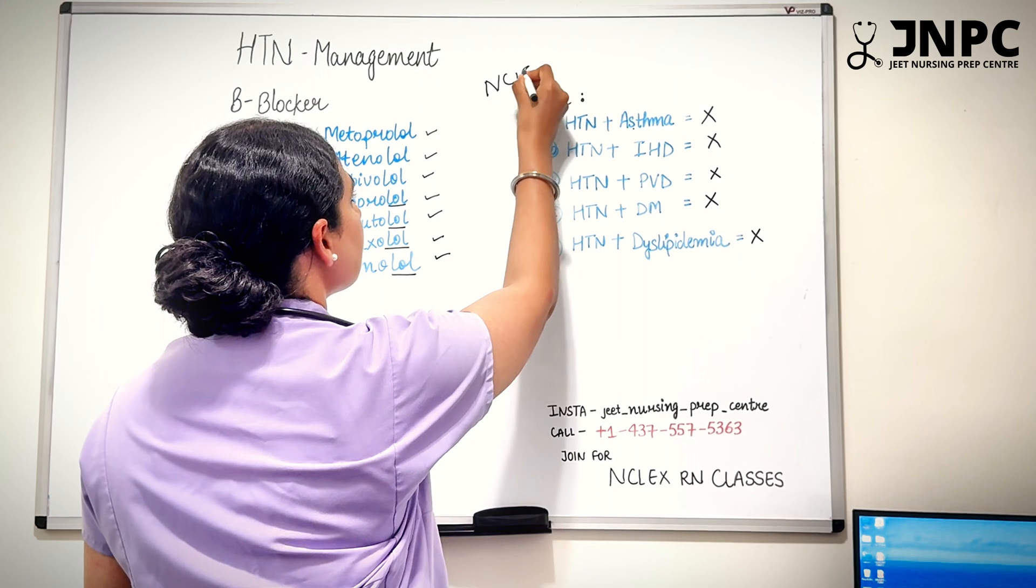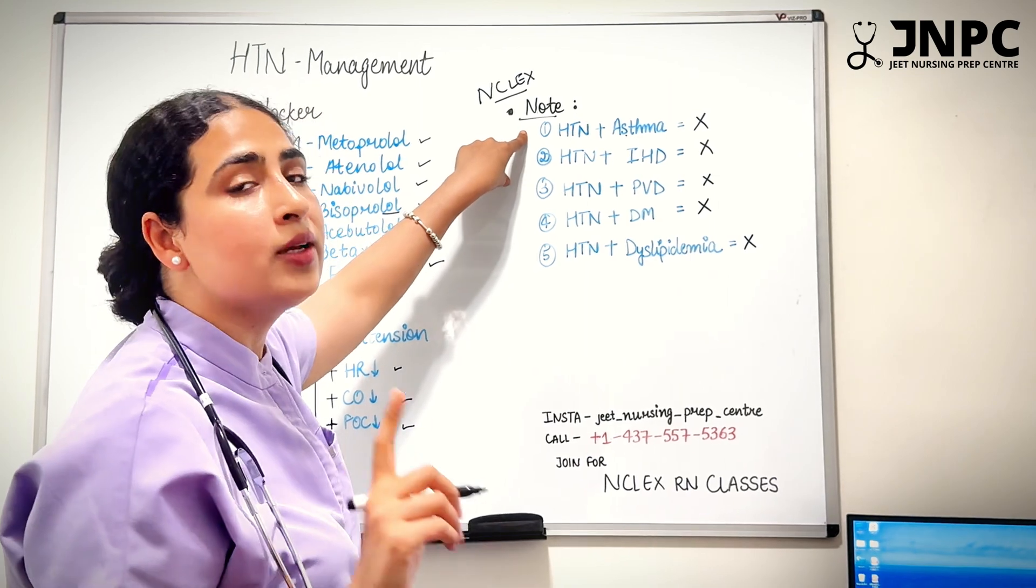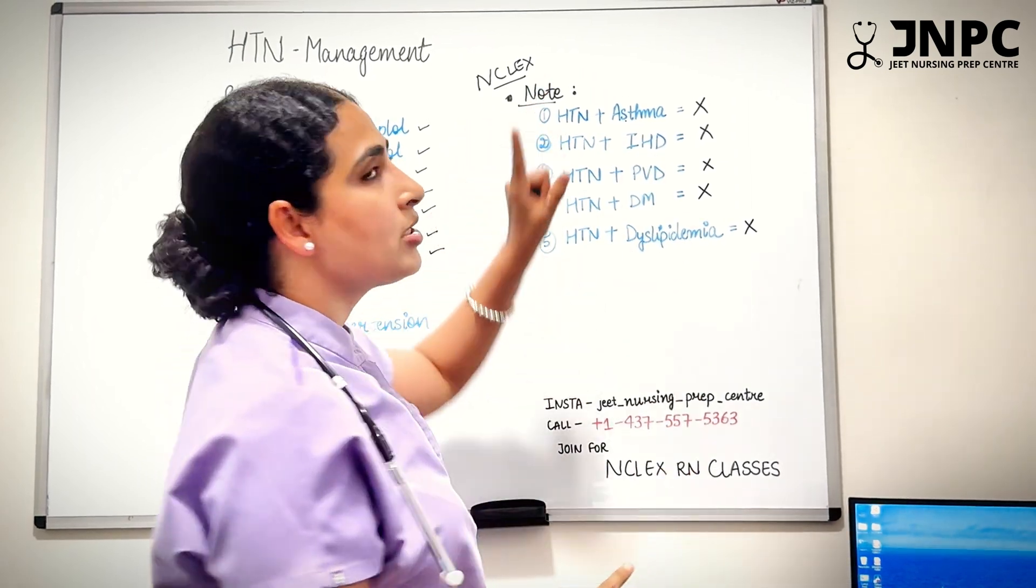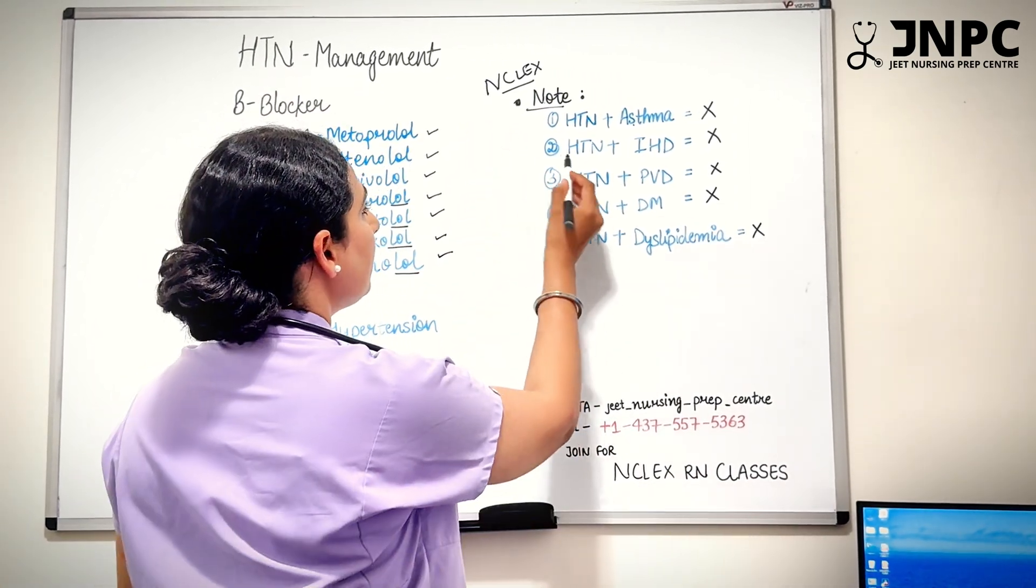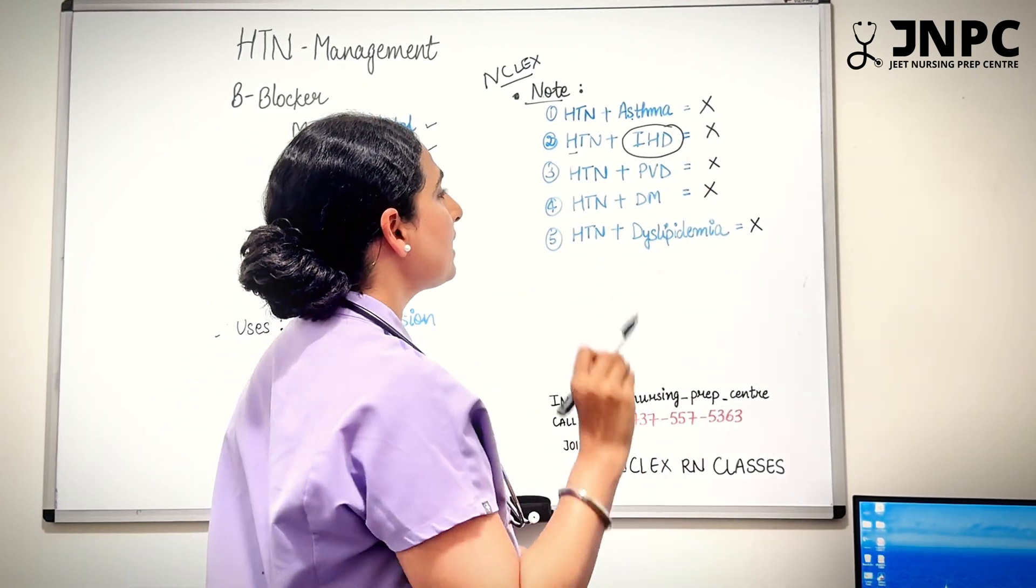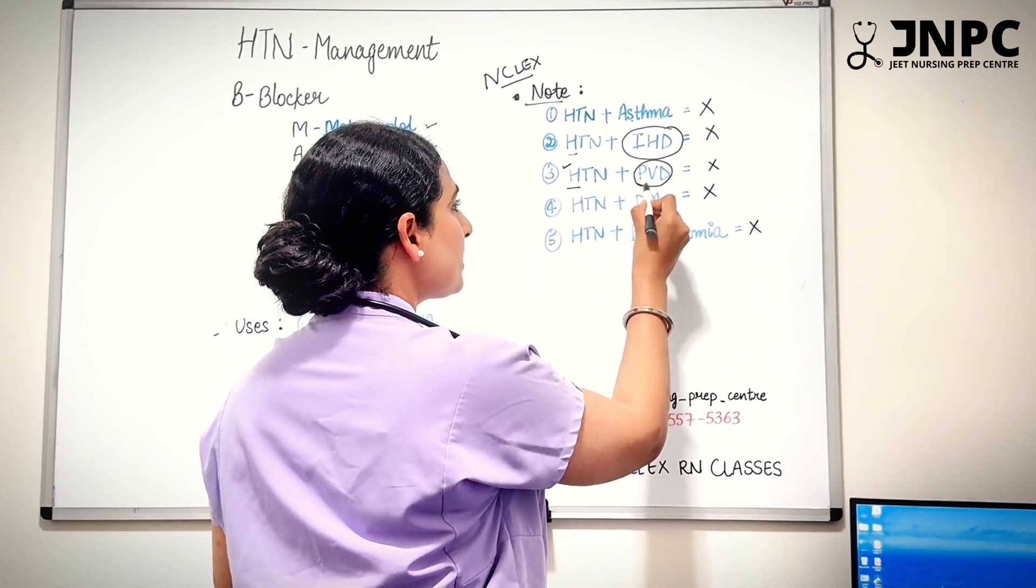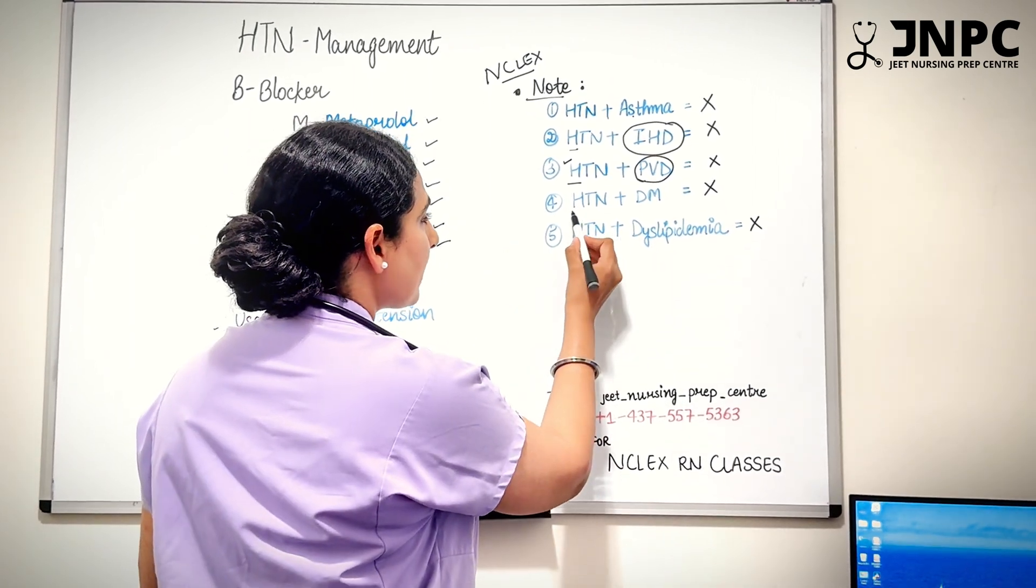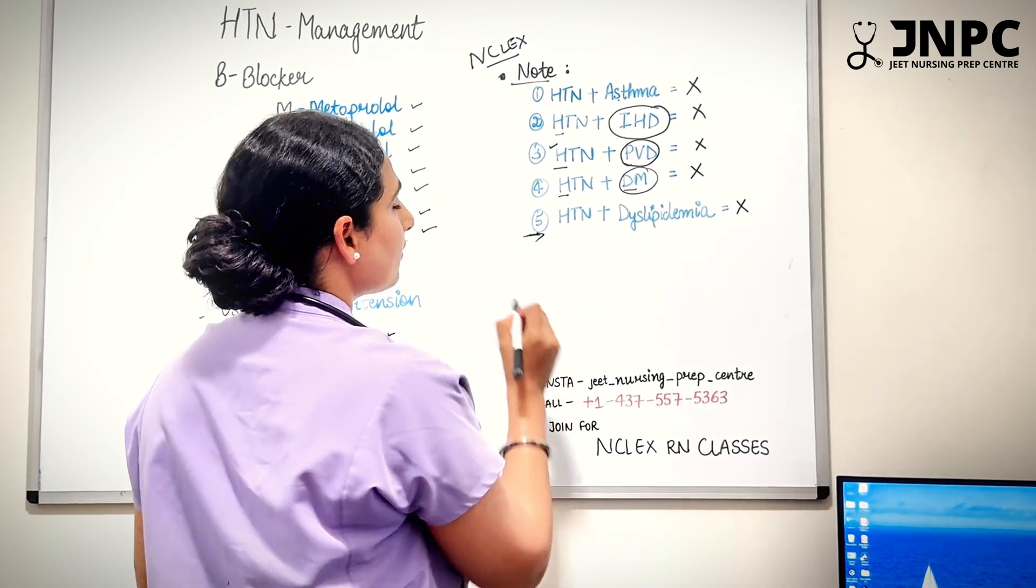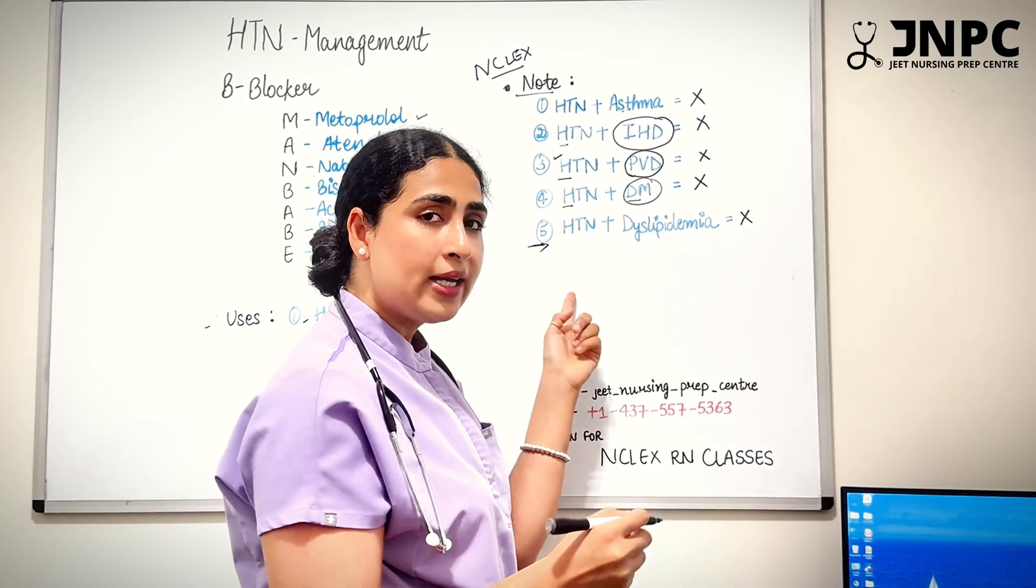blockers. But if your patient has hypertension and asthma both, never give beta blockers. Similarly, if your client has hypertension and ischemic heart disease, never give beta blockers. If your client has hypertension and peripheral vascular disease, never give beta blockers. If your client has hypertension plus diabetes, never give beta blockers. And last but not least, which is very underrated: if your client has dyslipidemia along with hypertension, we never use beta blockers. Tell me what is dyslipidemia in the comment section. Also, if you like our content,